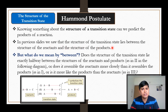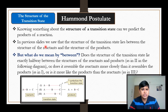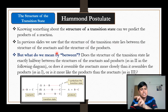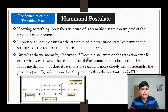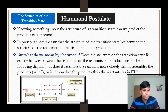In the previous lecture we saw that the structure of the transition state lies between the structure of the reactant and the structure of the product. From the right-hand side we have the structure of the product, on the left-hand side the structure of the reactant, and in between there is the transition state. But what do we mean by 'between'? Does the structure of the transition state lie exactly halfway between the structures of reactants and products?